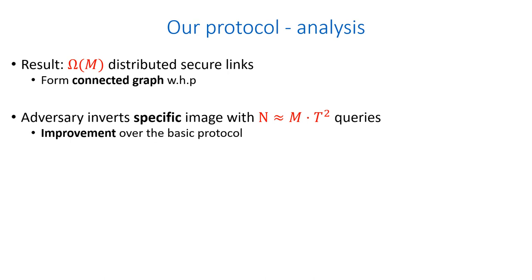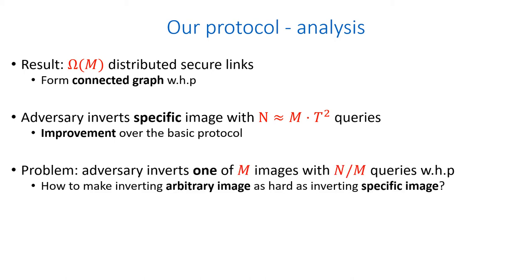The previous steps result in omega of m distributed secure links, which with high probability form a connected graph. Now, an adversary that wants to invert a specific image has to make omega of m times t squared queries to the random oracle. This is an improvement over the basic protocol in which the adversary needs only t squared queries to the random oracle. But still, there is a problem: the adversary can invert one of the secure links with high probability using only n over m queries, meaning that the query complexity gap is still quadratic.